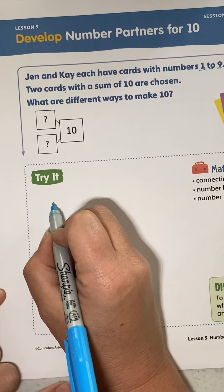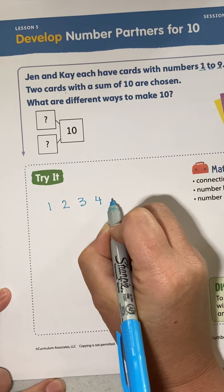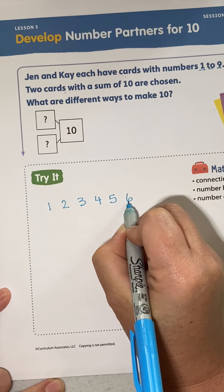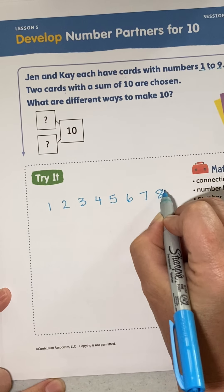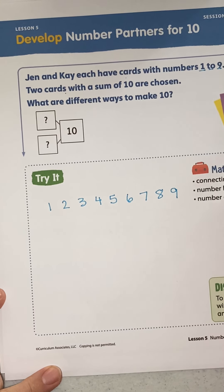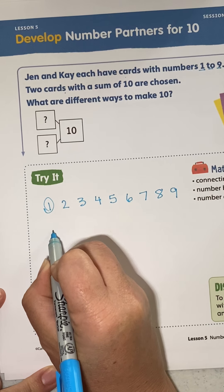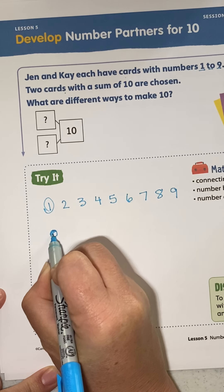If I have numbers 1 to 9, I'm gonna make a number line that says 1 to 9: 1, 2, 3, 4, 5, 6, 7, 8, 9. Okay, so if we draw a card and it has a 1 on it, let's draw one dot.